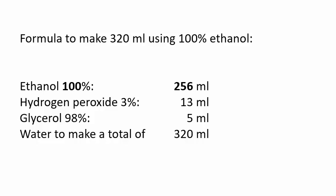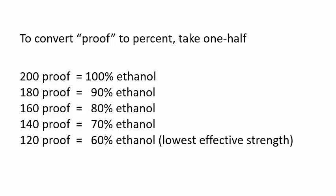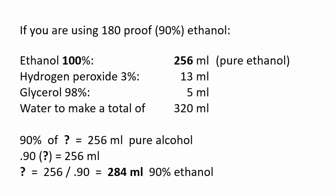If you're using less than 100% ethanol, convert the proof to percent by taking one half. For ethanol weaker than 100%, you need to add more milliliters to get the same amount of pure ethanol. For example, if you have 90% ethanol, divide the required amount of pure alcohol by 0.9. In this case, you need 284 milliliters of 90% ethanol.